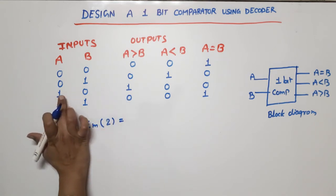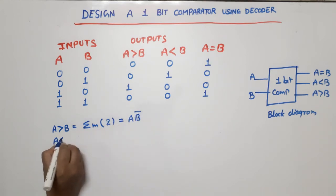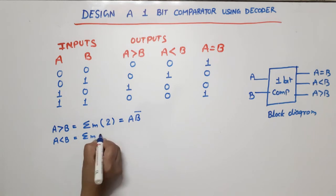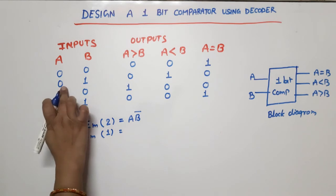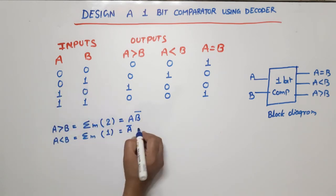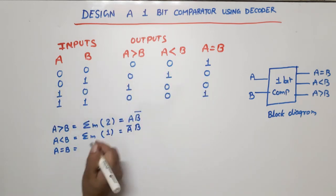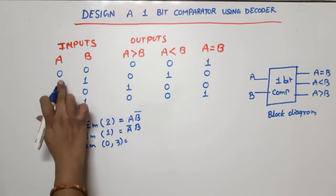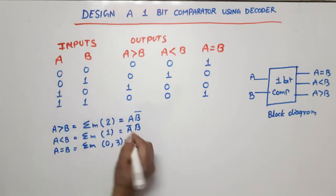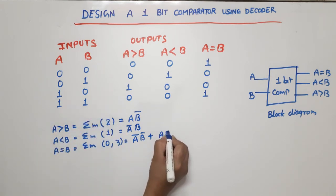A less than B equals minterm m1, which is A-bar·B. A equal to B has two cases: minterm m0 and minterm m3, giving the expression A-bar·B-bar + A·B. A greater than B equals minterm m2, which is A·B-bar. These are the Boolean expressions for all three outputs.